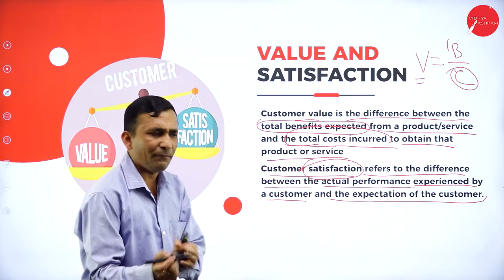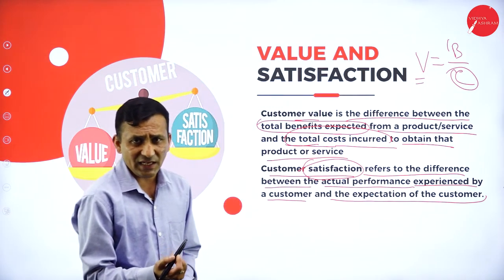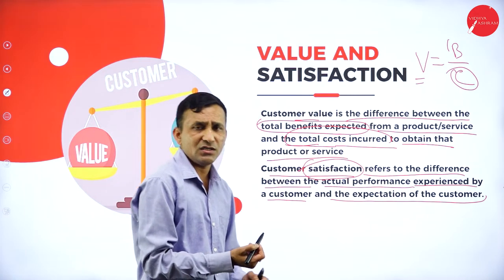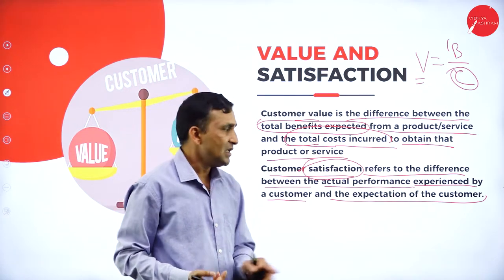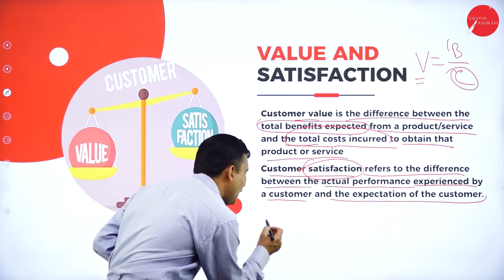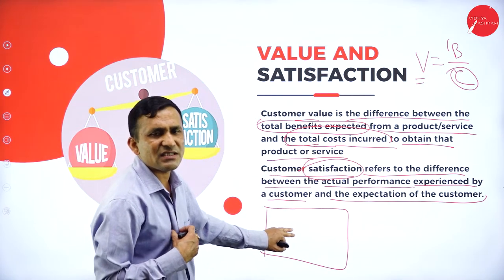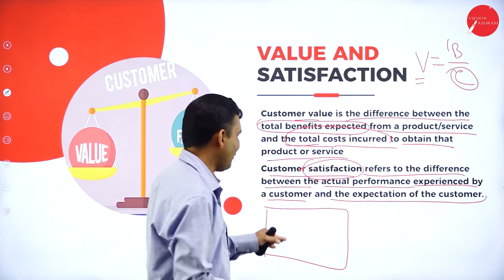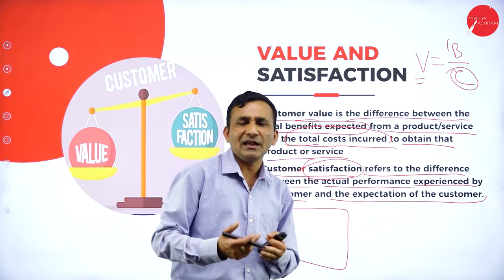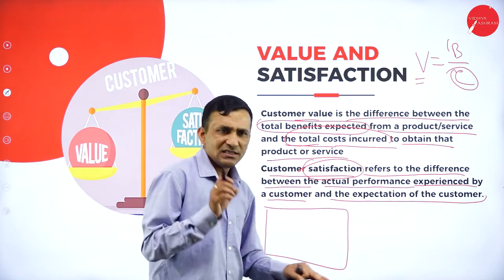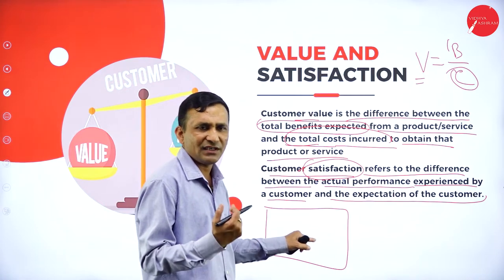Customer satisfaction refers to the difference between the actual performance experienced by the customer and the expectation of the customer. Before purchasing, actual expectations are there in the consumer point of view. After purchasing, we realize the real benefit. For example, going to a big restaurant — the customer is very attracted seeing the restaurant. After getting the food served from the hotel, then they give a rank. Just by looking at the premises, we cannot decide — only after getting the product can we evaluate.